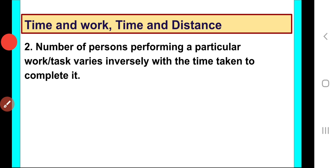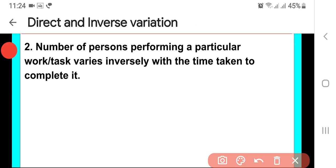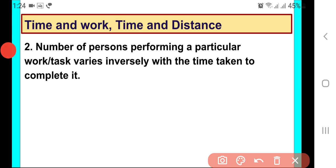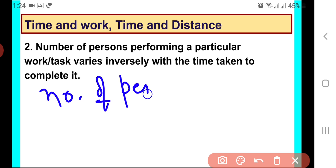Now moving on to the next situation. The next situation is: number of persons performing a particular work and time taken to complete it. The two quantities are number of persons and time taken.